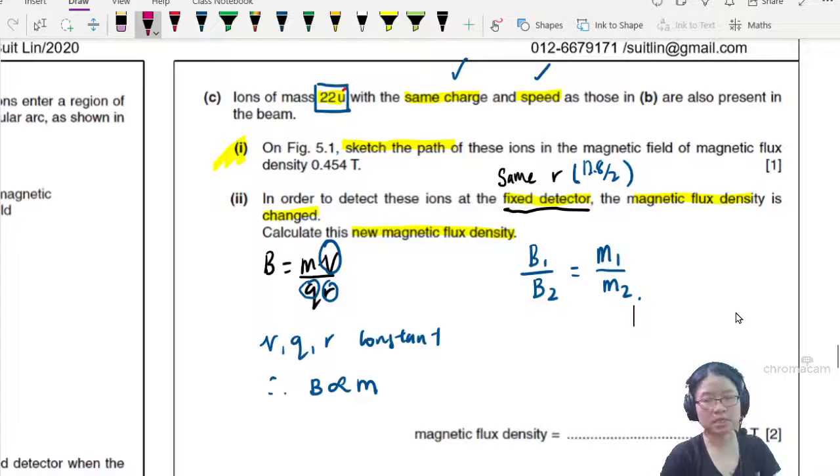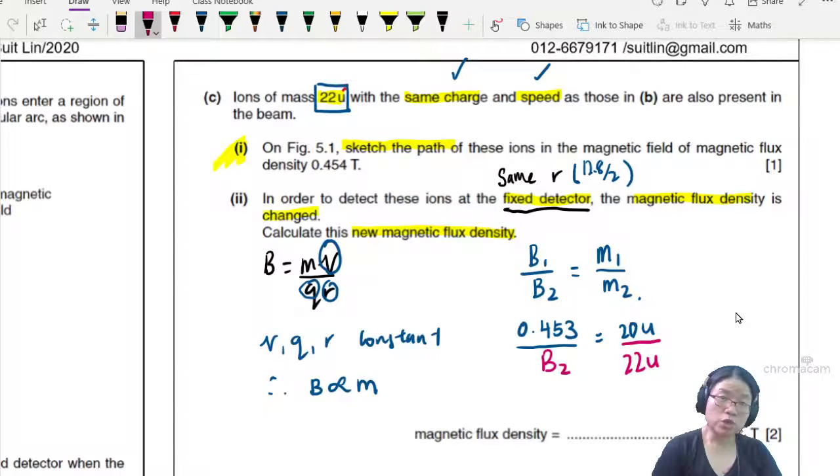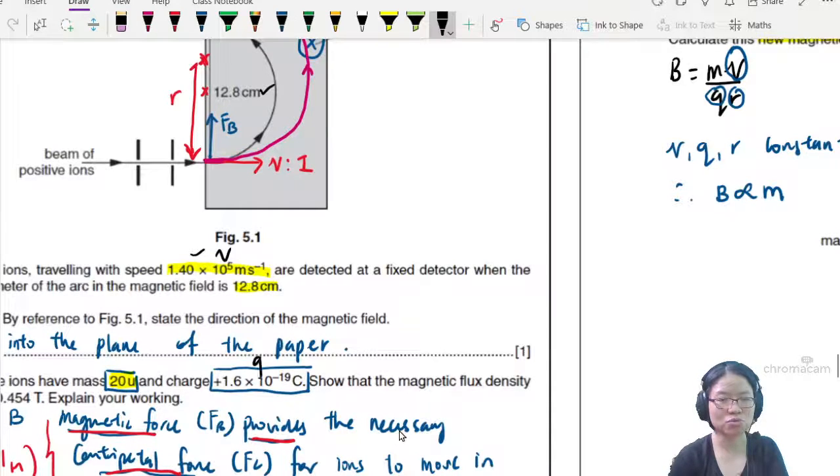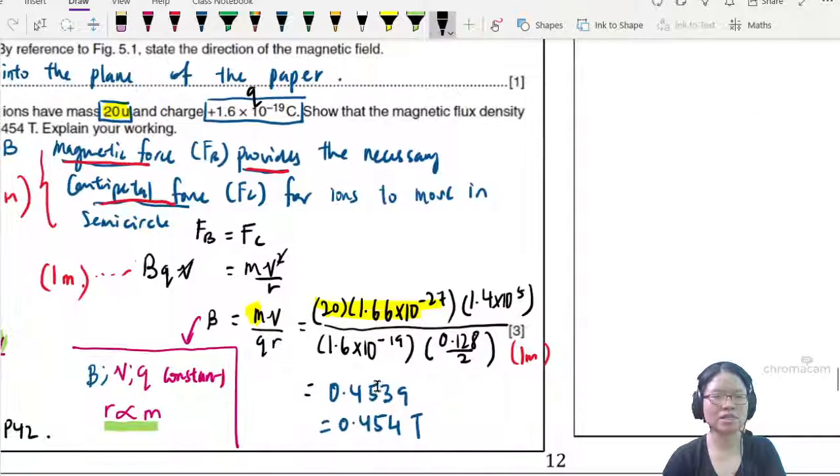If you want to, you can use equations like this to confirm. B is proportional to M. The old value of B was 0.453 divided by, and the old value is 20U. The new value of B we want to find, the new value of M is 22U. The benefit of doing ratio is that you don't have to convert the U, they cancel out. If you decide to use this equation and plug the value in, because some of you might be thinking, actually miss, why can't I put 22U in M? I put back the value of V given in this question, which is this one. This is V.